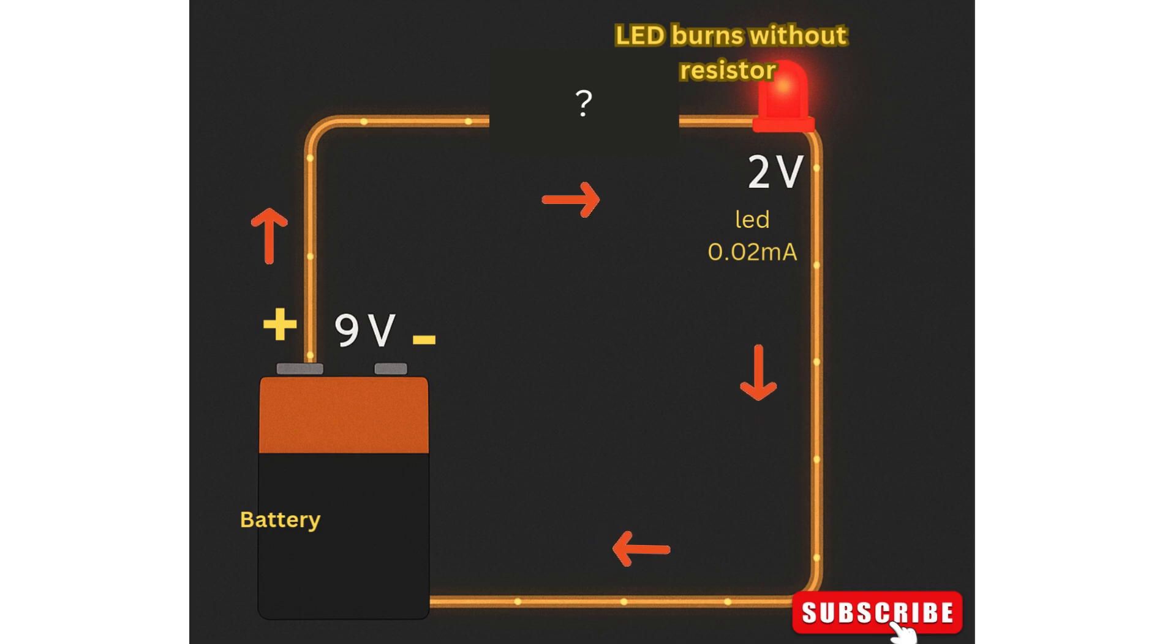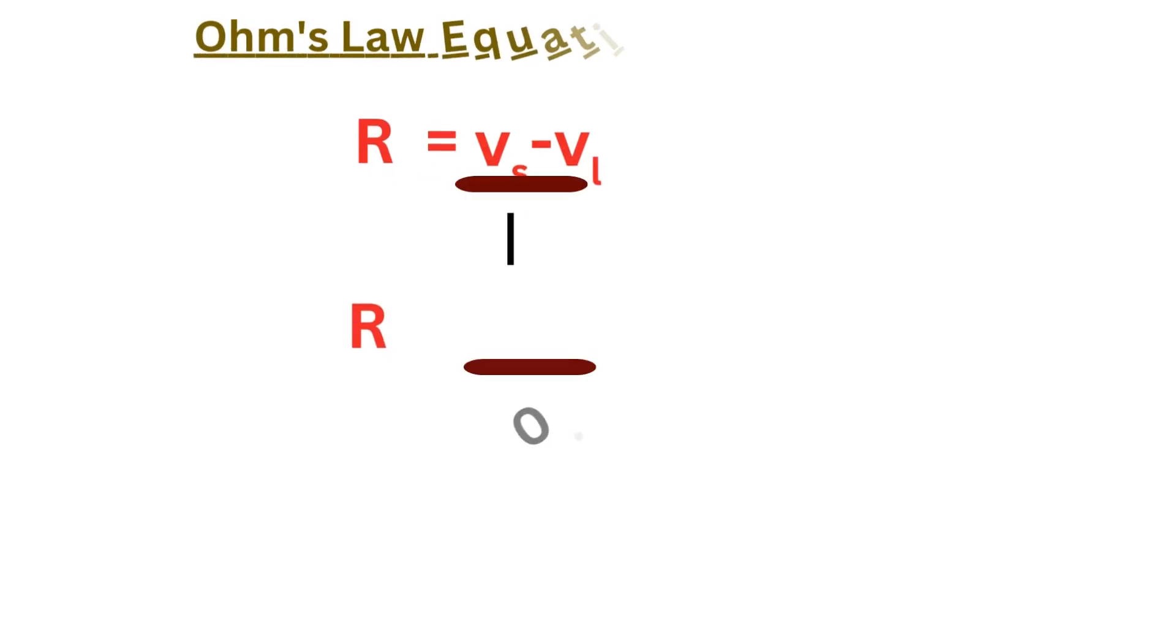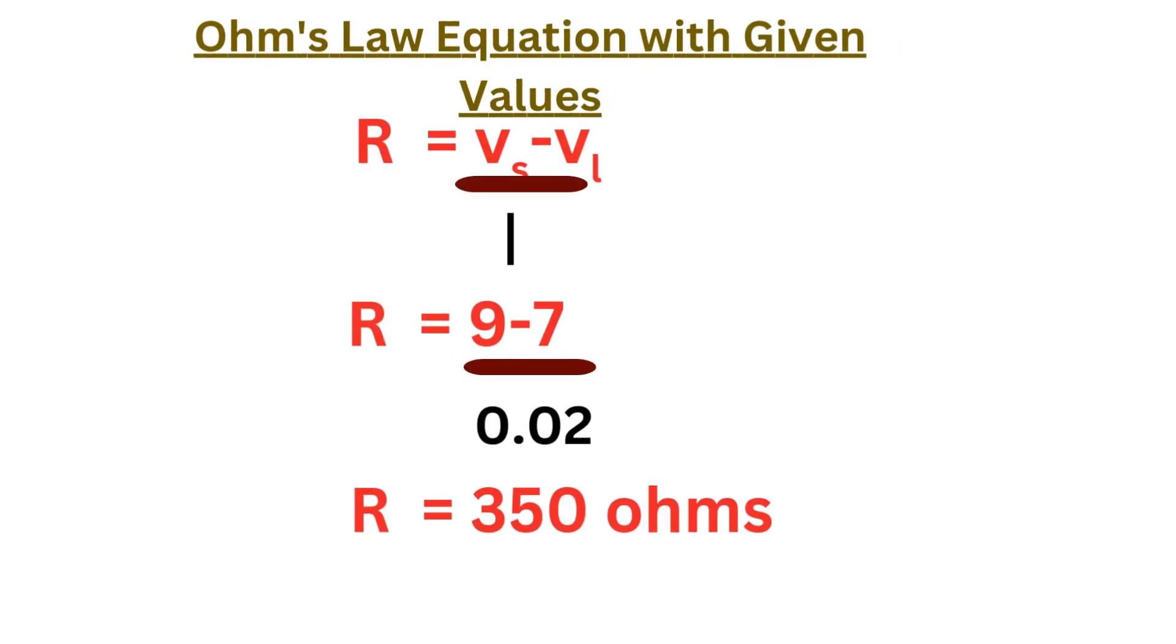LEDs are very sensitive. They need only a small amount of current, usually around 20mA. To protect the LED we use a resistor to limit the current. Using Ohm's law we can calculate the right resistor value.